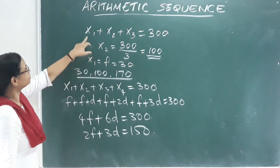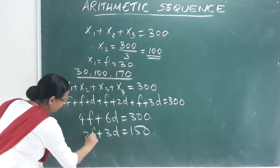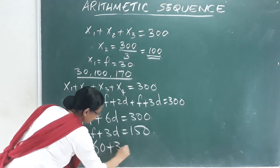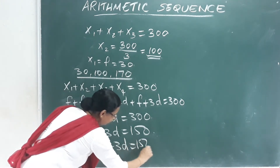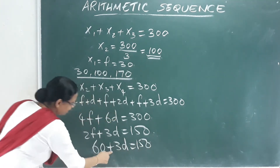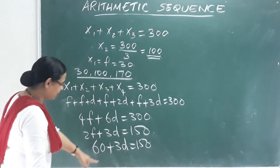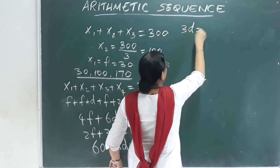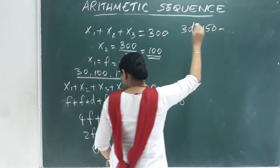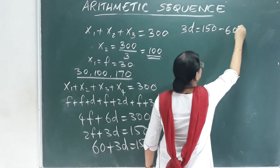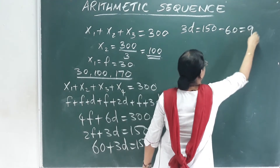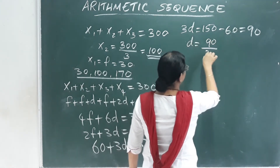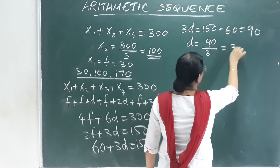Since the first term F is 30, we substitute: 60 plus 3D equals 150. Therefore 3D equals 150 minus 60, which equals 90. So D equals 90 divided by 3, which equals 30.